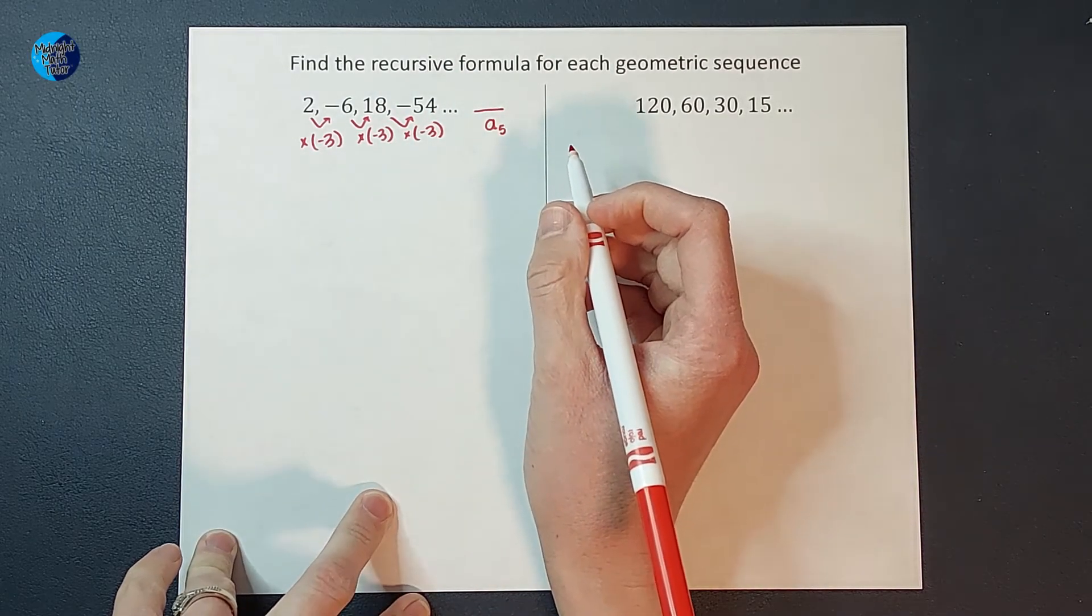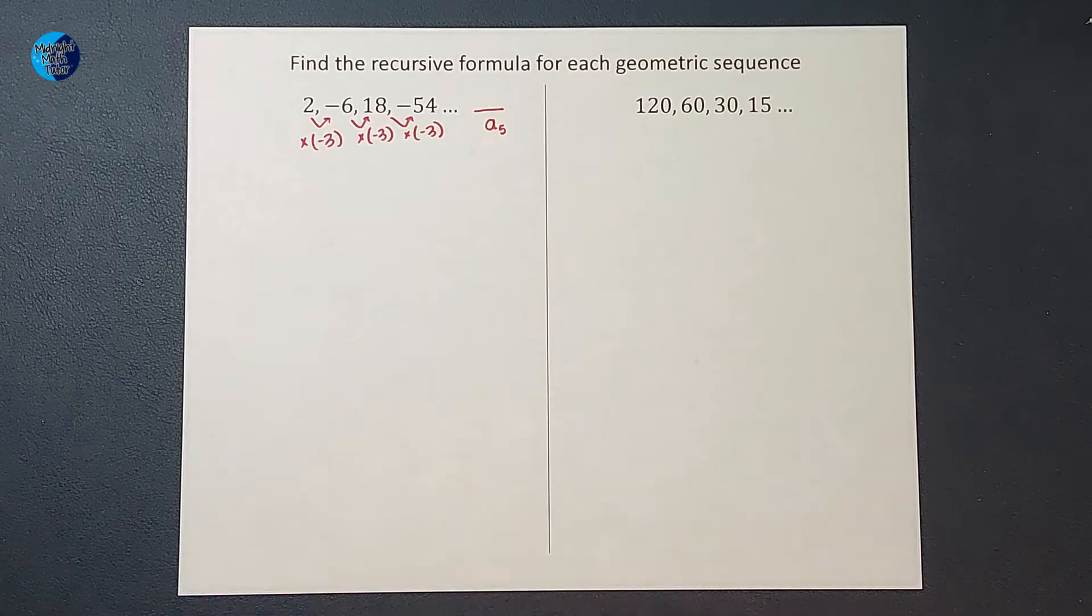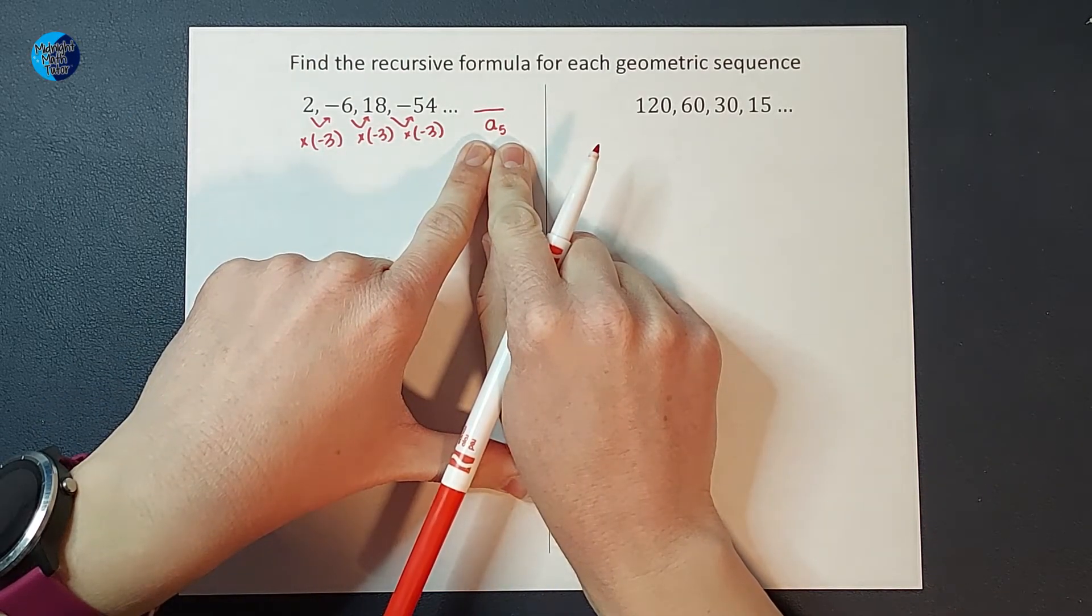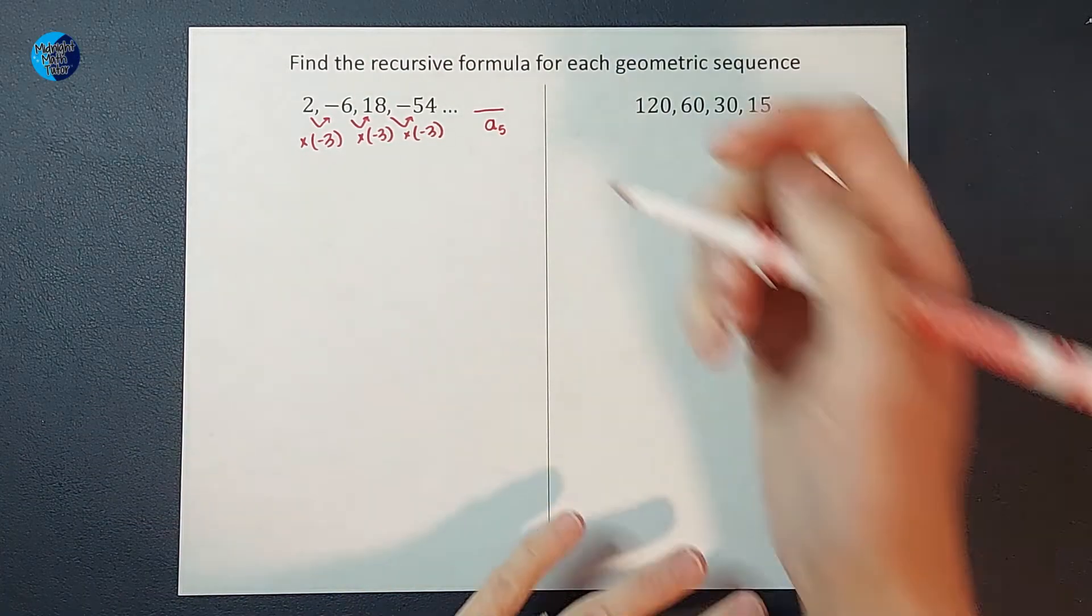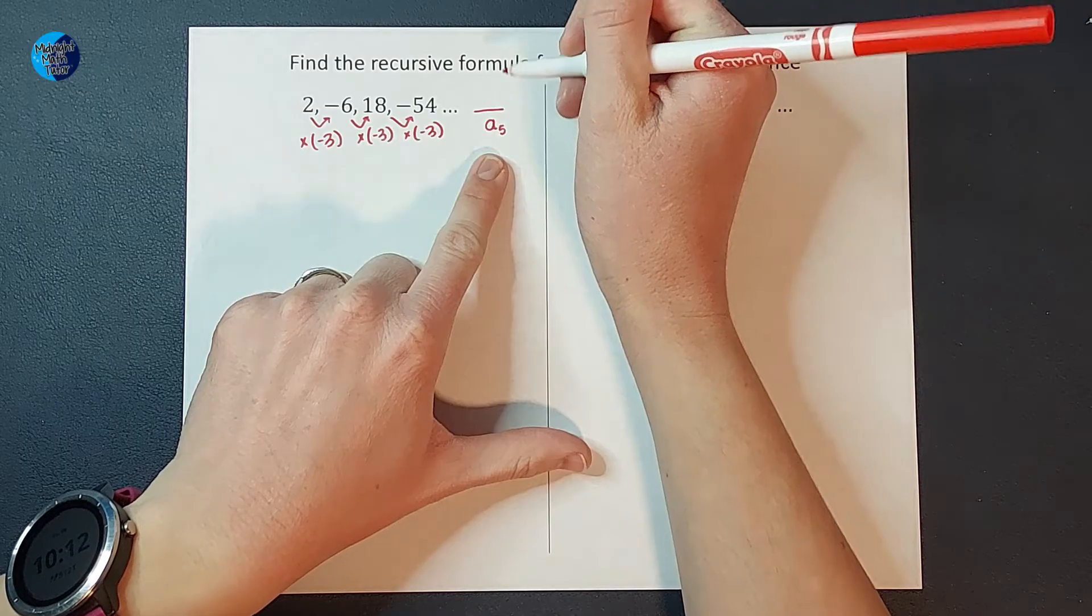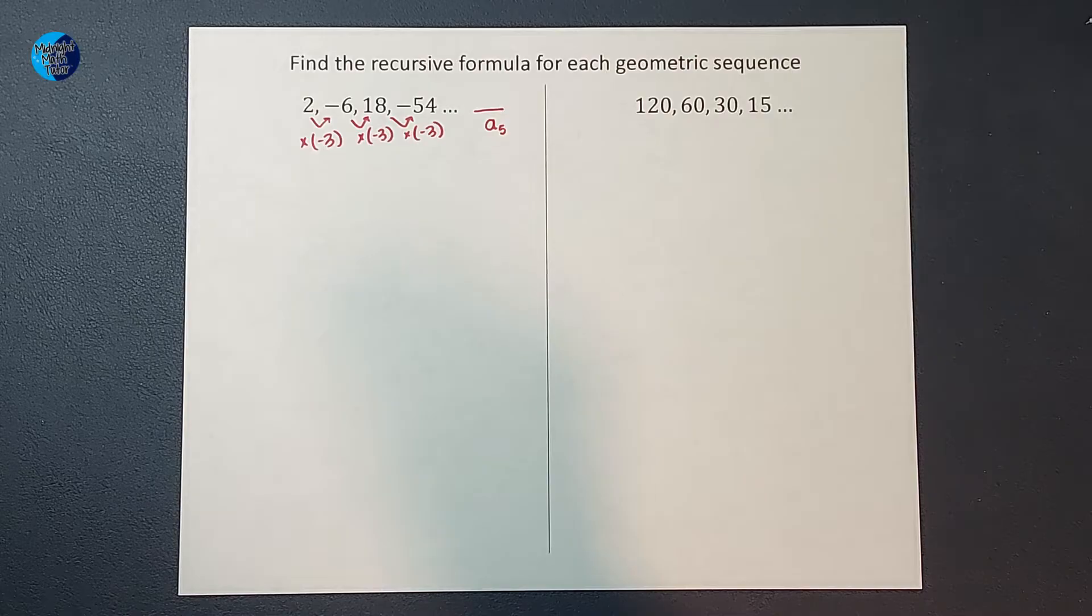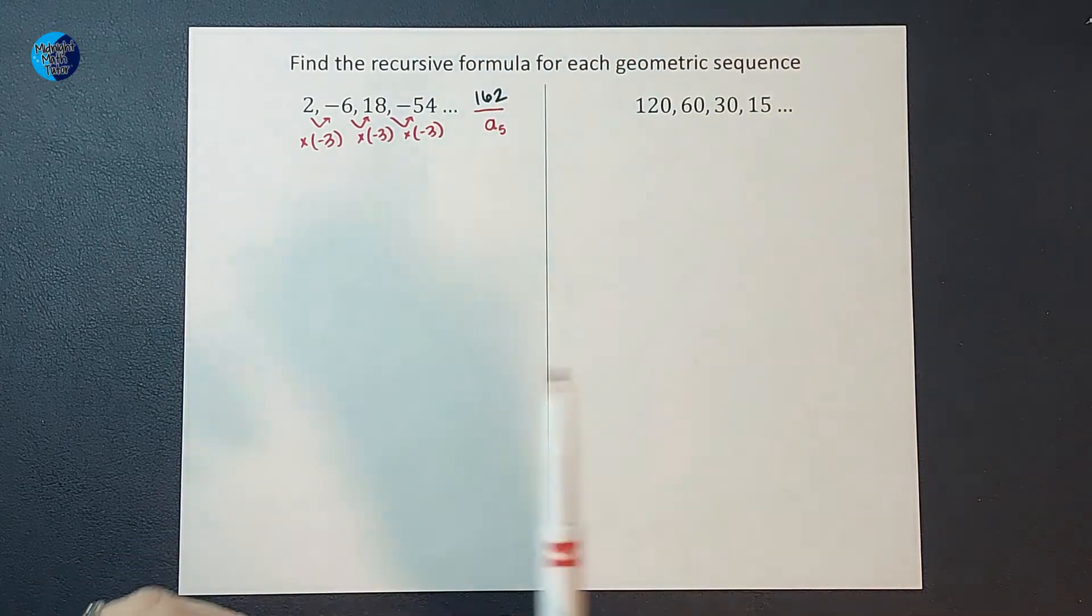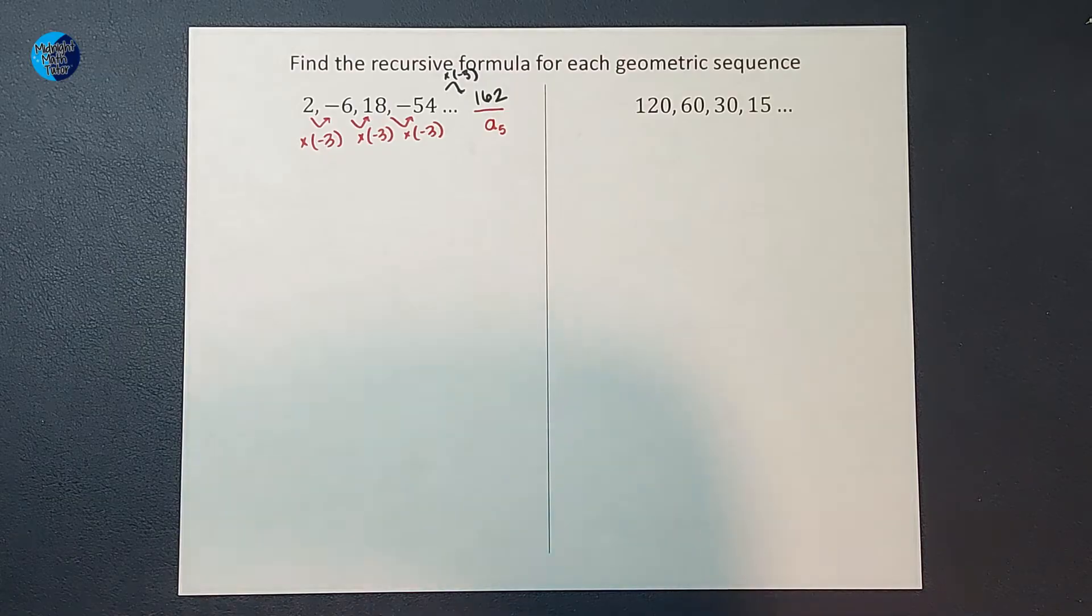Your English teacher would be like, A plus, wonderful job. But we don't usually write things out like that in math. We like to use math terms, equal signs and numbers and things. So how do I say whatever number you want to find, take the number before it and multiply by negative 3? Well, let's look at it for a second. If I multiply this by negative 3, what do I end up with? I end up with 162. I'm going to write that right here, because all I did was continue the pattern. I multiplied by negative 3.